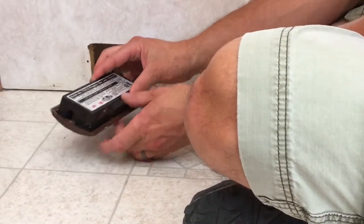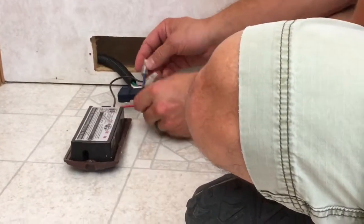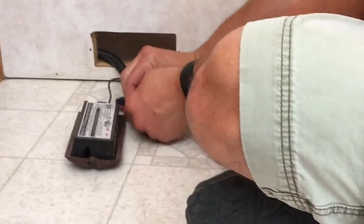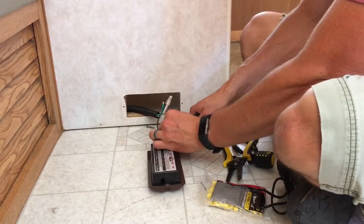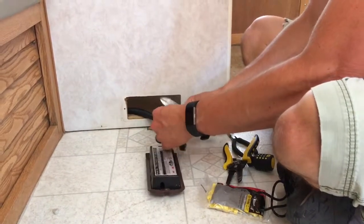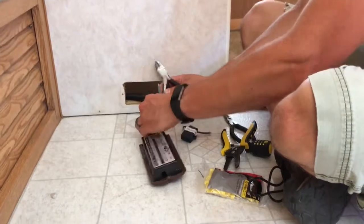These are crimped on and they're really tight, so I'm just going to cut them off. You'll just have to strip the wire again. So we have red and black.